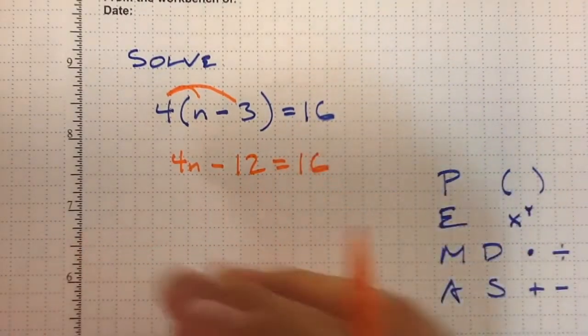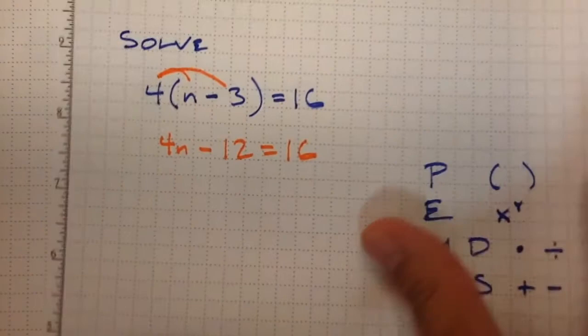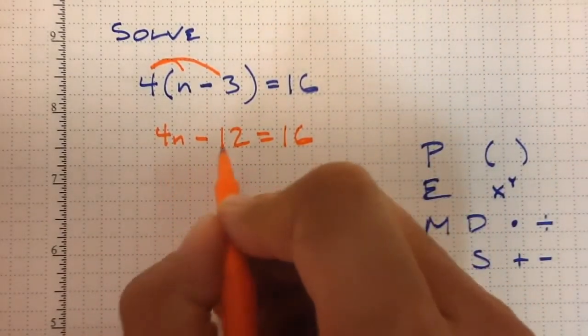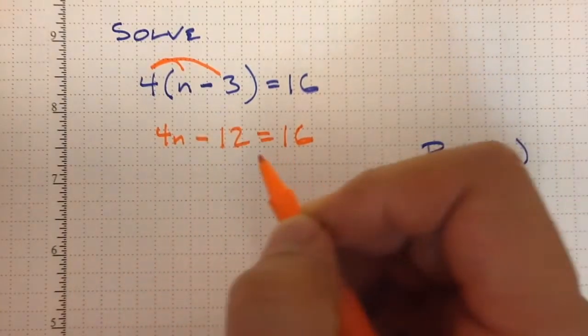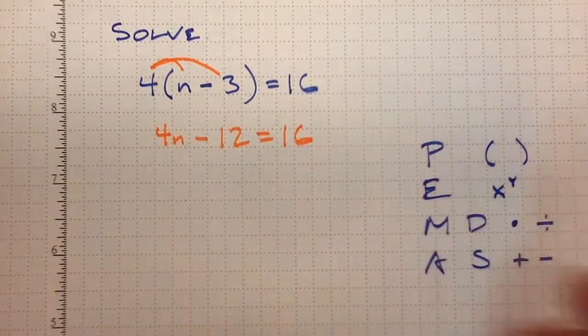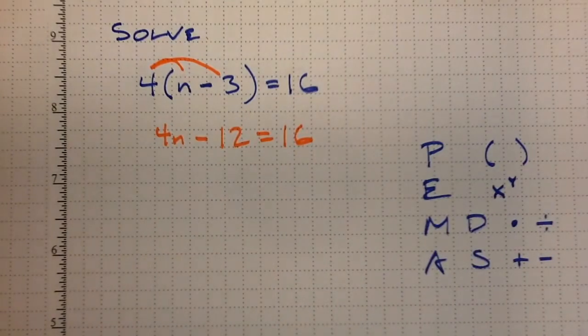Alright, so now that I've cleaned it up a bit, I can start focusing on undoing things. I need to get rid of this minus 12, so at some point we're going to add 12. I have to get rid of this times 4, so at some point we're going to divide by 4. But in what order does that happen?